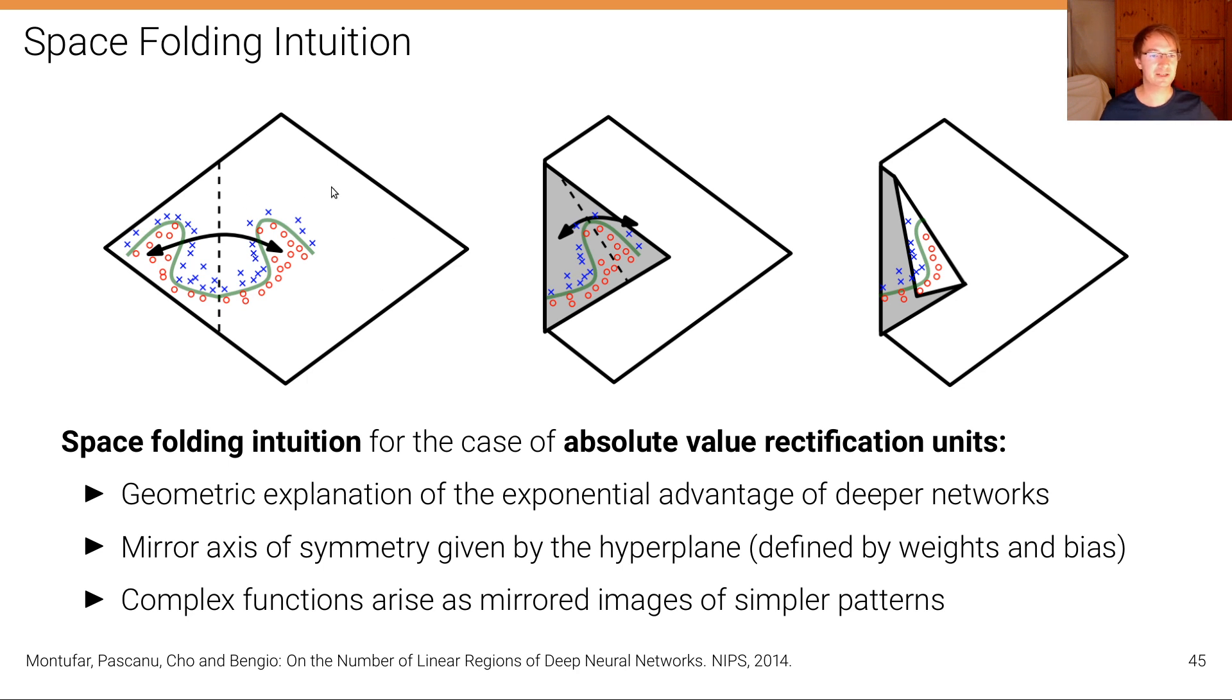It provides a geometric explanation of the exponential advantage of deeper networks as follows. So think of this white sheet here as the space on which the input data lives. In this case two-dimensional, but it could be higher dimensional, it could be arbitrarily high dimensional. And so what happens effectively with these absolute value rectification units is that entities are mirrored along the axis defined by the hyperplane. So this is the mirror axis of symmetry which is given by the hyperplane defined by the weight and bias of the respective unit.